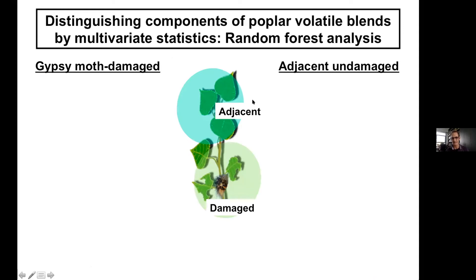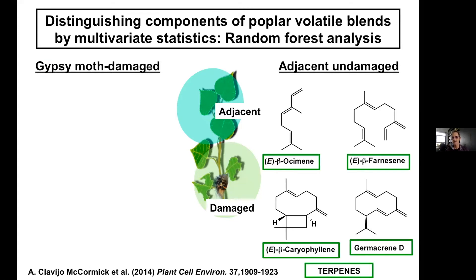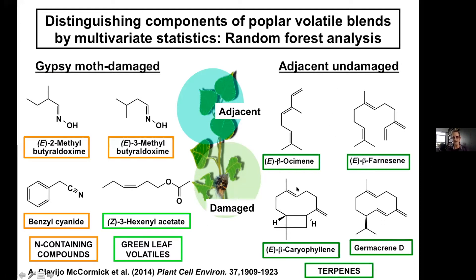So something in the volatile blend from gypsy moth-damaged foliage attracts females of this wasp. The question was: what compound? It took a while to look at the blends. Sibylla brought in multivariate statistics — a machine learning algorithm — to pick out which compounds are typical of which blend. The algorithm told us that for undamaged leaves, terpene compounds were typical, while for gypsy moth-damaged leaves, nitrogen-containing compounds and some green leaf volatiles were characteristic.